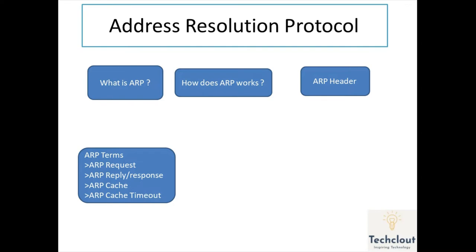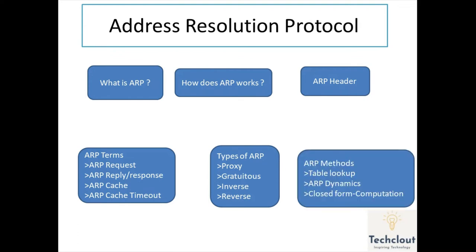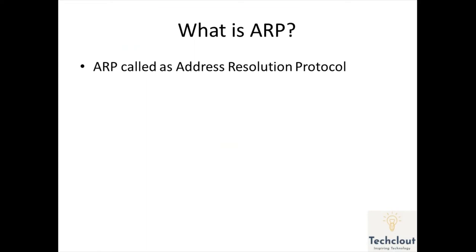We'll cover ARP request, ARP reply, ARP cache, and ARP cache timeout. Then we'll discuss types of ARP: proxy ARP, gratuitous ARP, inverse ARP, and reverse ARP. We'll also discuss ARP methods like table lookup, ARP dynamics, and closed form computation.